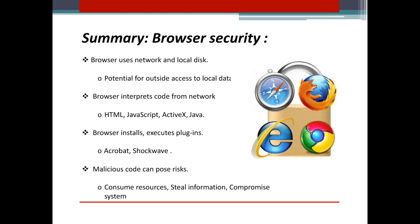This is the summary for browser security. Browsers use network and local disk, with potential for outside access to local data. Browsers interpret code from the network including HTML, JavaScript, and ActiveX. Browsers install and execute plugins such as Acrobat and Shockwave. Malicious code can pose risks: consuming resources, stealing information, and compromising our system.